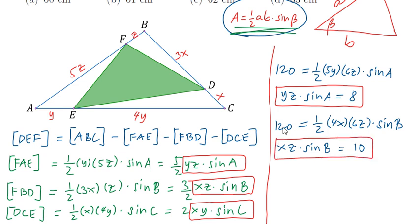Finally, we have 120 equals 1 half times, take note we are using here angle C, so we have 4x times 5y times the sine of angle C. If we solve for XY sine C, we should get 12.